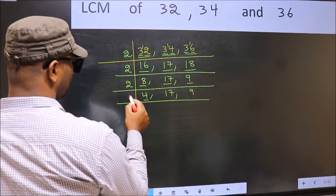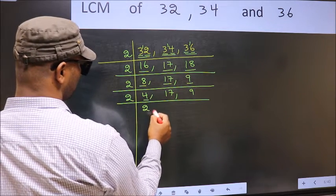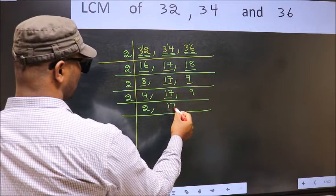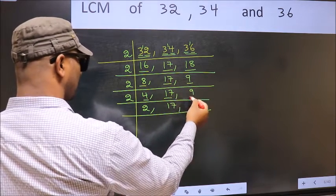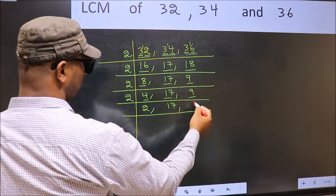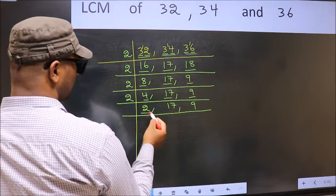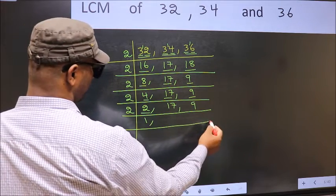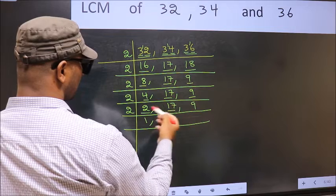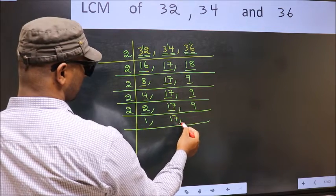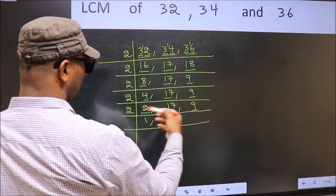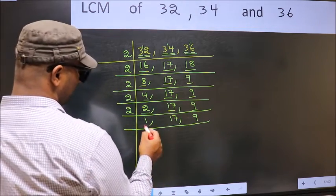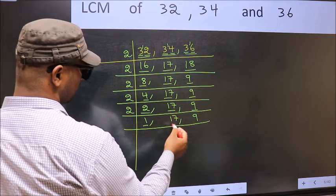Now here we have 4. 4 is 2, 2's 4. The other number 17 — not divisible by 2, so you write it down as it is. The other number 9 — not divisible by 2, so you write it down as it is. Now here we have 2. 2 is a prime number, so 2, 1's 2. The other number 17 — not divisible by 2, so you write it down as it is. The other number 9 — not divisible by 2, so you write it down as it is. Now we got 1 here.